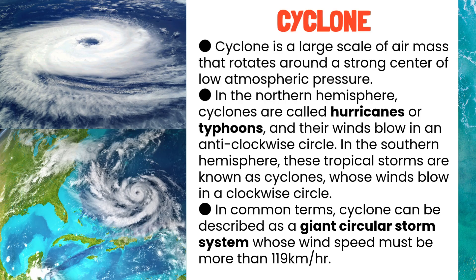In the southern hemisphere, these tropical storms are known as cyclones, whose winds blow in a clockwise circle. In common terms, a cyclone can be described as a giant circular storm system whose wind speed must be more than 119 kilometers per hour.